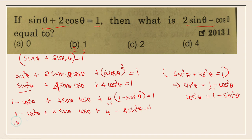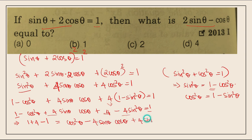Now collecting the constant terms: we have sin²θ plus 4cos²θ plus 4sinθcosθ equals 1. Looking at the constants on the left side, 1 and 4 are here. On the right side is 1. So 1 plus 4 minus 1 equals 4. We recognize the form a² minus 2ab plus b², which is the a minus b whole square formula.